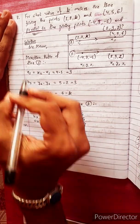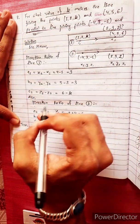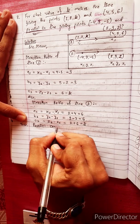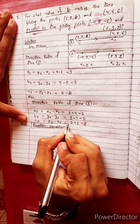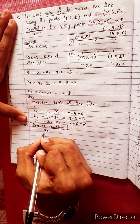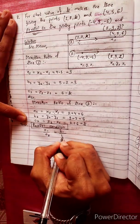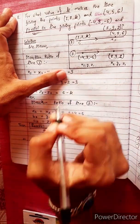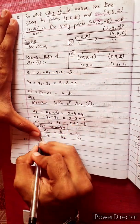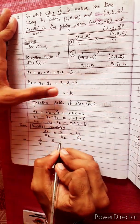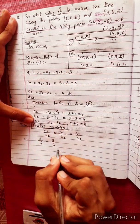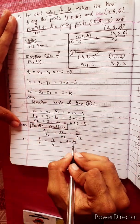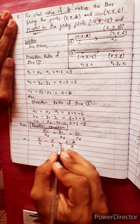For lines to be parallel, the parallel condition is a1 by a2 equals b1 by b2 equals c1 by c2. This means 4/6 equals 3/6 equals (6-k)/8. This simplifies the condition.